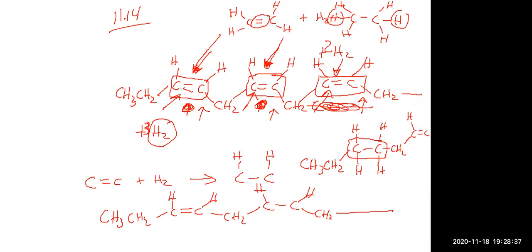Basically what we're doing is hydrogenating it — we're making an alkene into an alkane if we completely got rid of all the double bonds. And nothing else on that big giant molecule would be different other than simply changing the double bonds into single bonds, and then obviously the hydrogens come in when you do that.